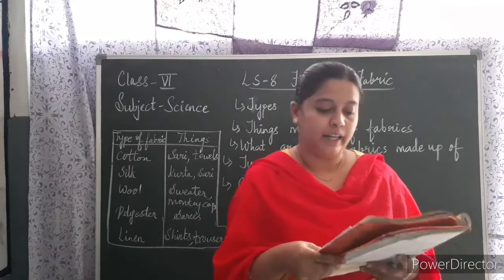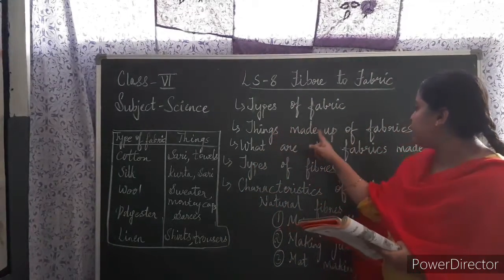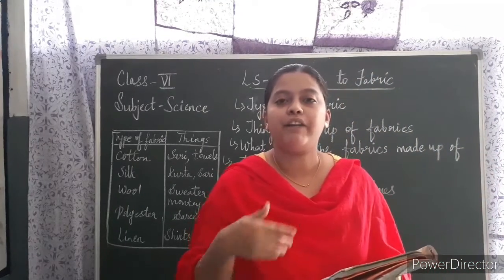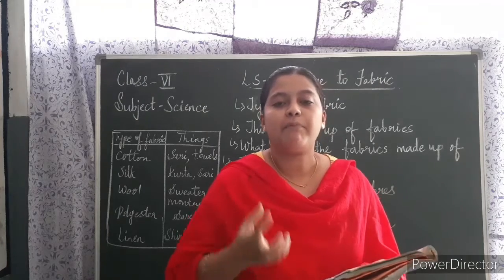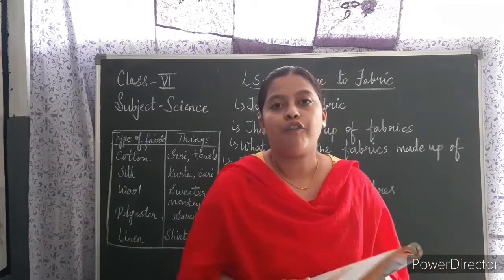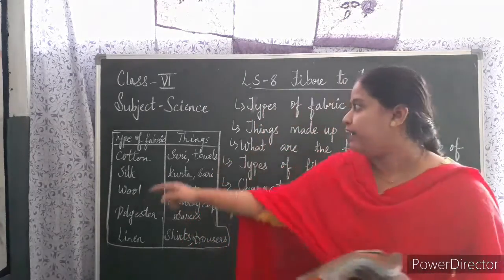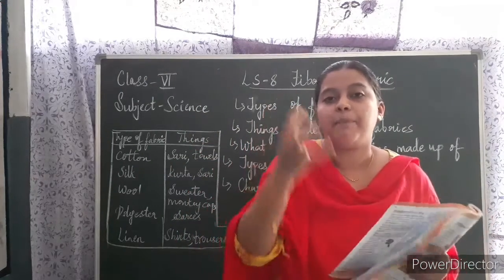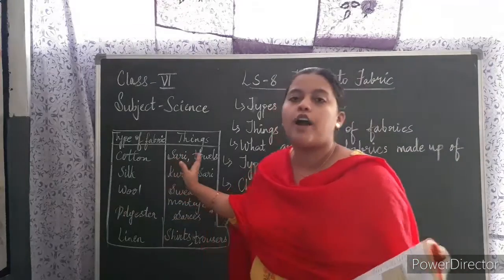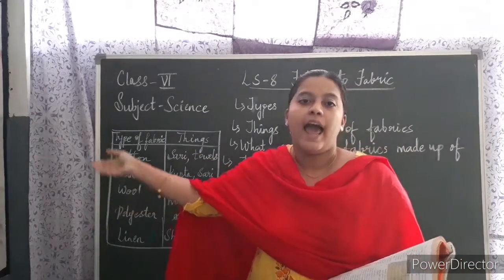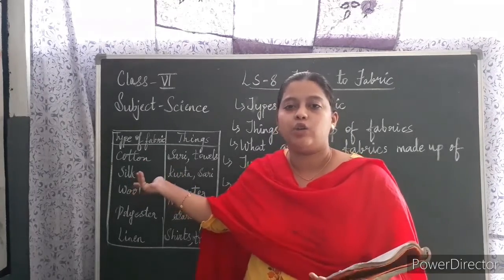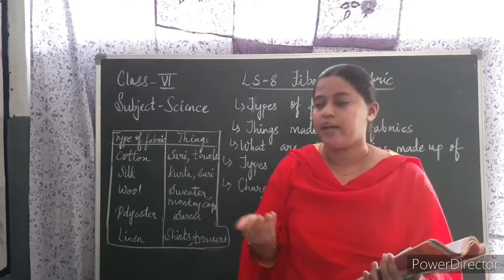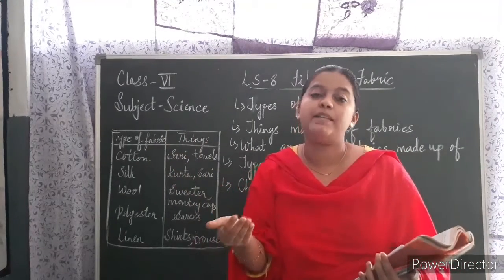Coming to things made up of fabrics: in our houses we wear different varieties of clothes. In table number one — types of fabrics you wear and what things are made from those fabrics — from cotton, saris and doubles are made. We use doubles and women wear saris. Sari is a national dress for Indian women.